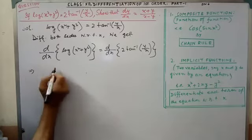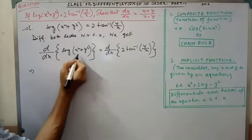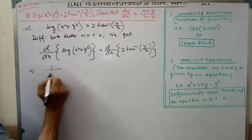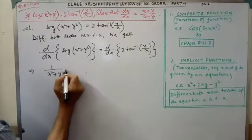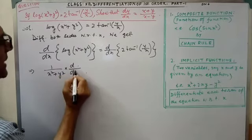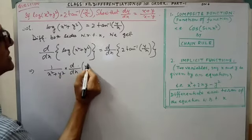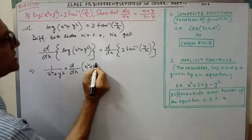by differentiating log, that is 1 by x square plus y square. This part, again, you have to differentiate. That is, by chain rule. This is the composite function.